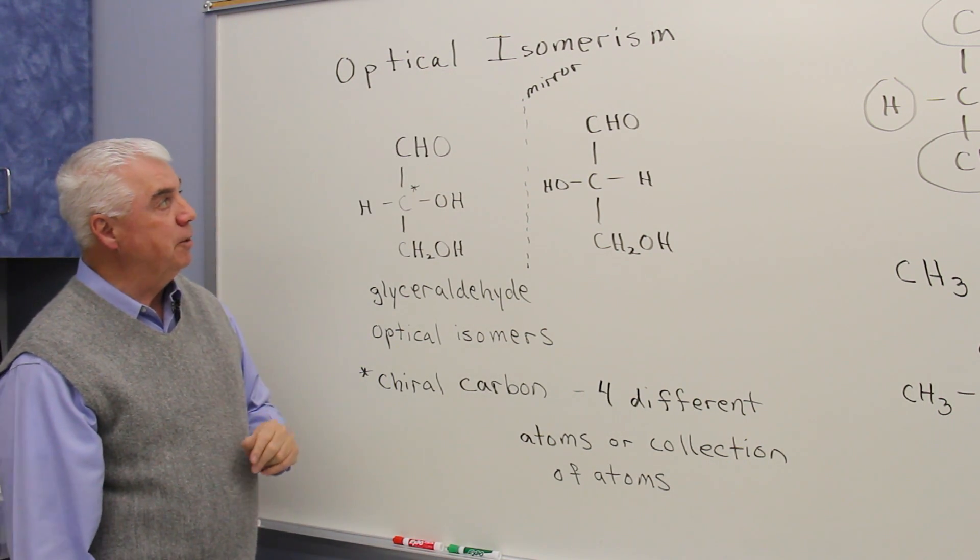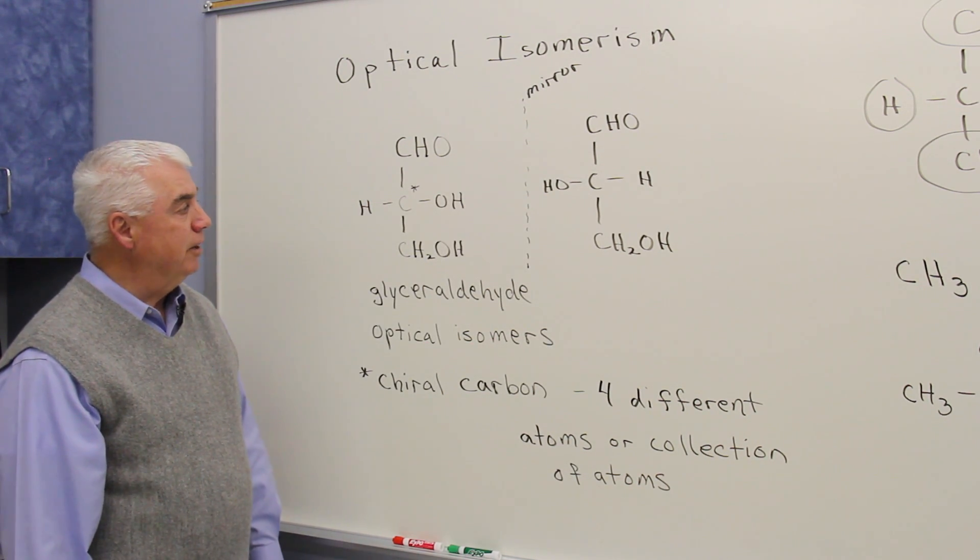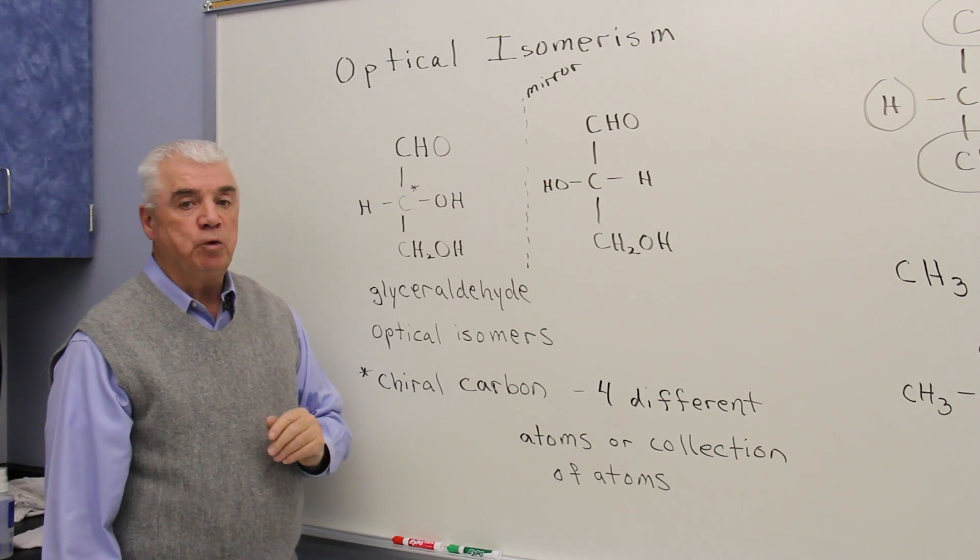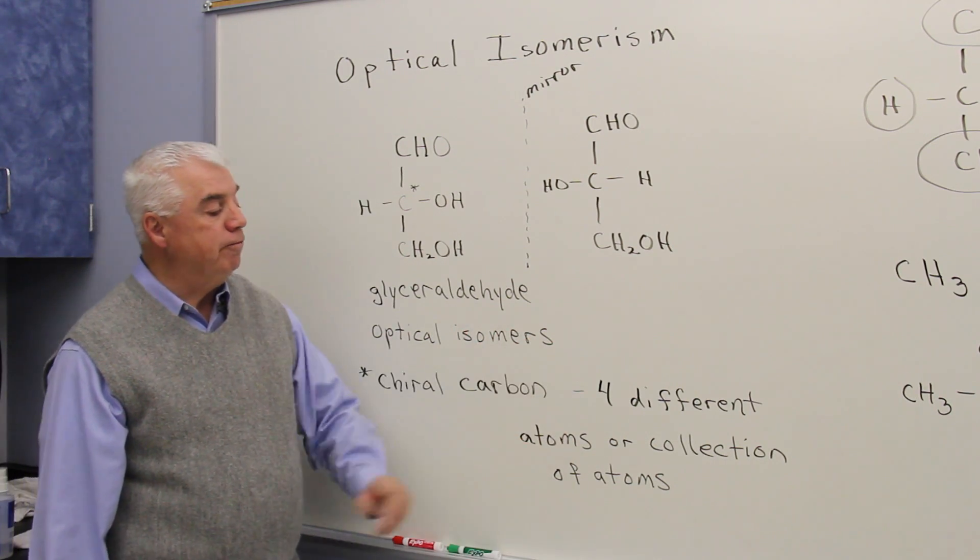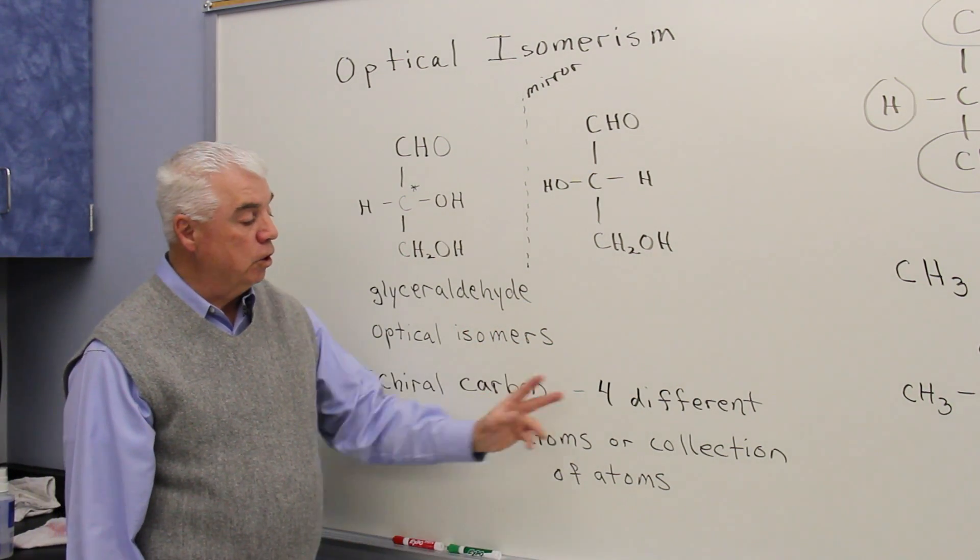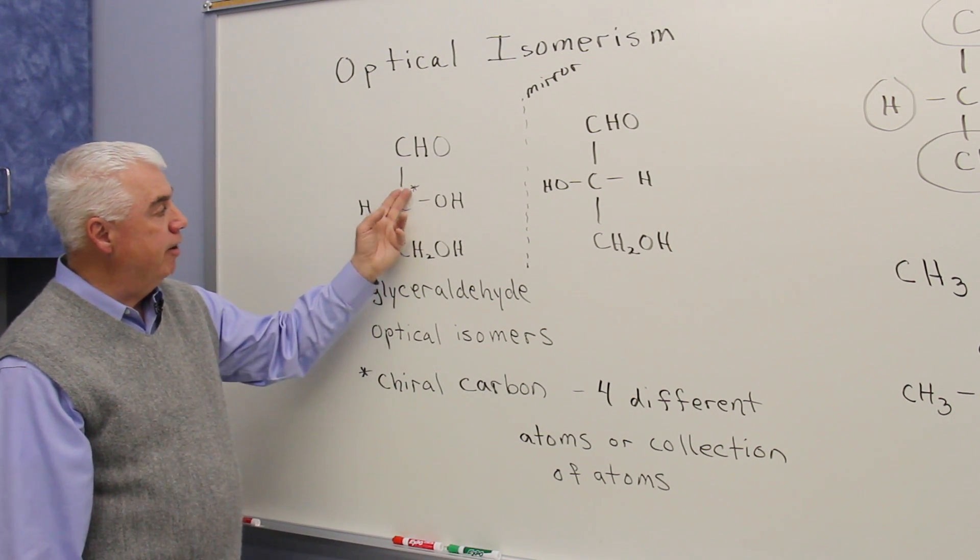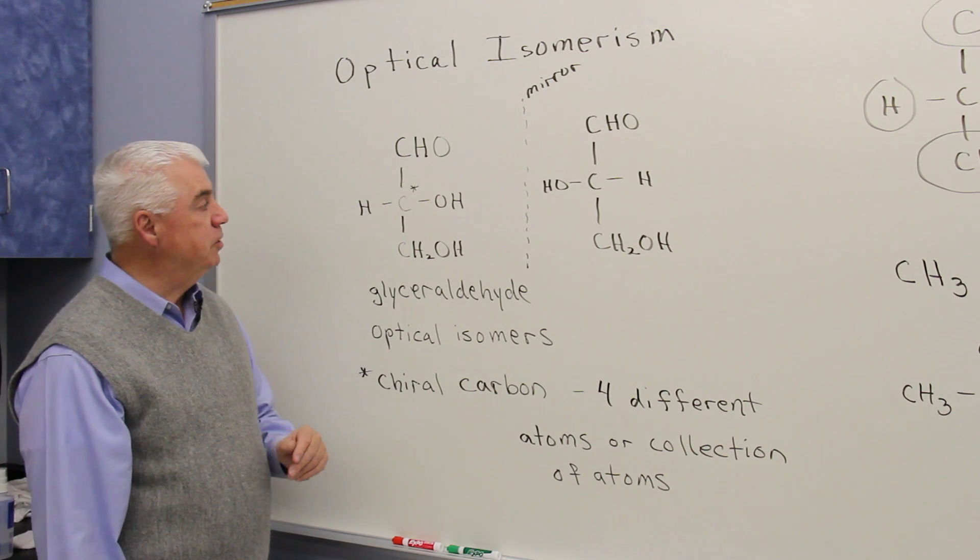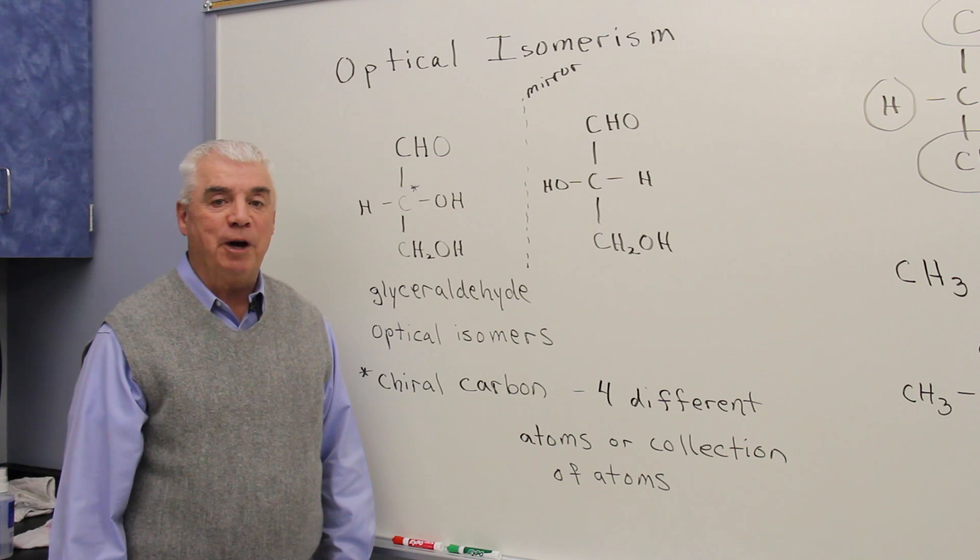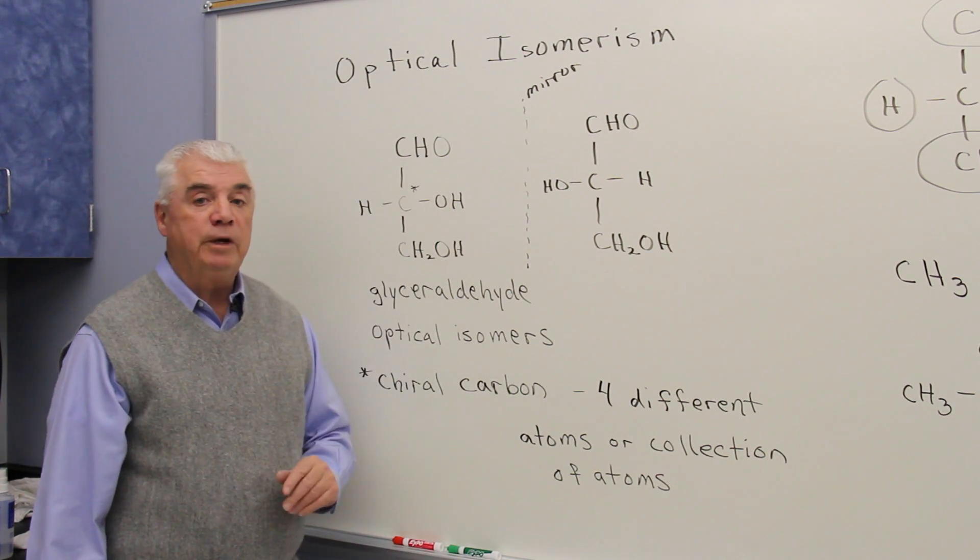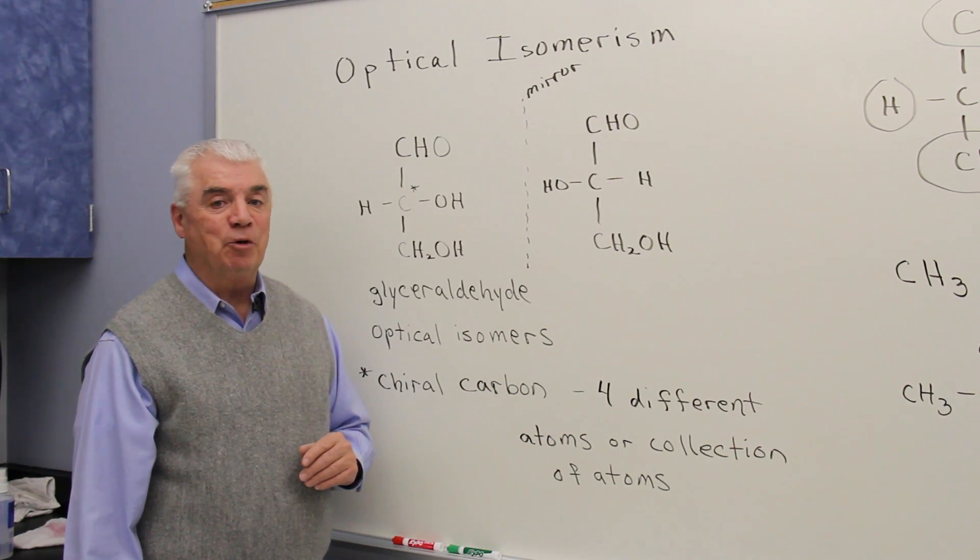When something exhibits optical isomerism, we refer to the structures as optical isomers. And the feature that we believe gives rise to this kind of isomerism is when carbon has four different groups, or four collections of atoms attached to it. And those are called chiral carbon atoms. And here I've marked this atom with an asterisk. And one of the skills, one of the learning objectives for this chapter in carbohydrates, is to be able to identify chiral carbon atoms and predict when optical isomerism would exist.